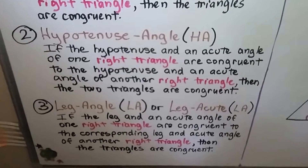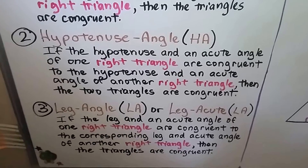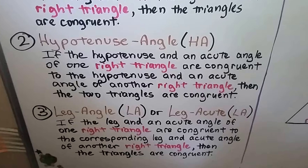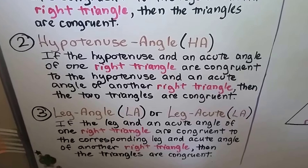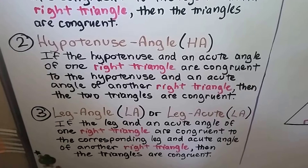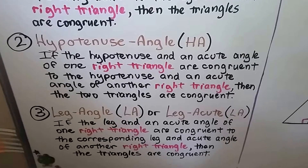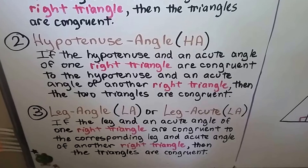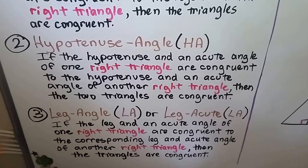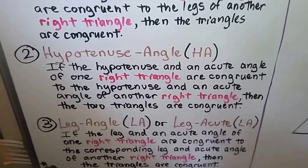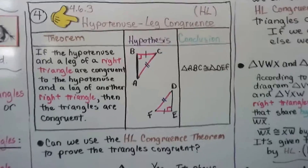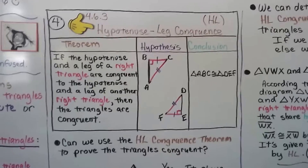We have number three, Leg Angle, LA. You might even see it called Leg Acute for Leg Acute Angle. If the leg and an acute angle of one right triangle are congruent to the corresponding leg and acute angle of another right triangle, then the triangles are congruent. And that brings us to number four, which is Hypotenuse Leg congruence, that's HL.